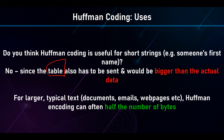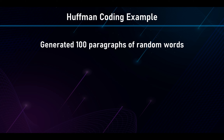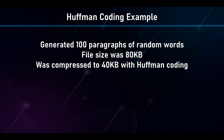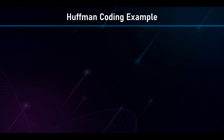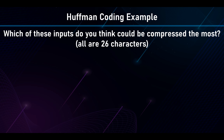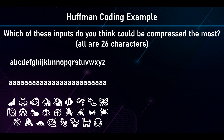However, for larger typical text like documents, emails, and web pages, Huffman coding usually halves the number of bytes. As a test, generating 100 paragraphs of random Lorem Ipsum text gave a file size of 80 kilobytes, and compressing it gave about 40 kilobytes — a 50% compression ratio. Let's look at three examples of 26 characters each and think about which can be compressed the most: the alphabet A to Z, 26 repeated A's, or 26 different emojis.